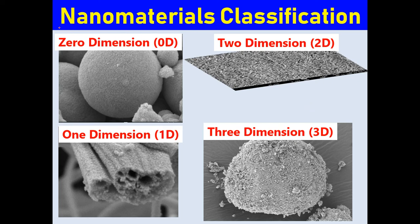In today's video, I am going to talk about the classification of nanomaterials. Nanomaterials are basically divided into four classes: the first is zero-dimensional, which includes nanoparticles and quantum dots; the second is one-dimensional, such as nanowires and nanotubes; the third is two-dimensional, which is a sheet; and the fourth is three-dimensional, like a compact shape or a cauliflower. Let's get started with each class in detail.